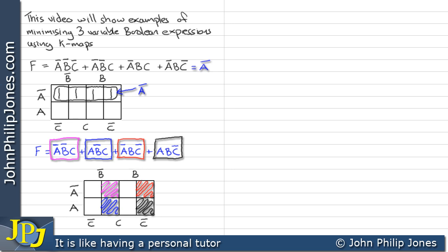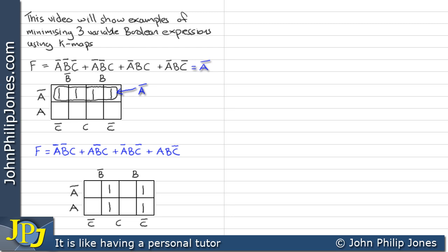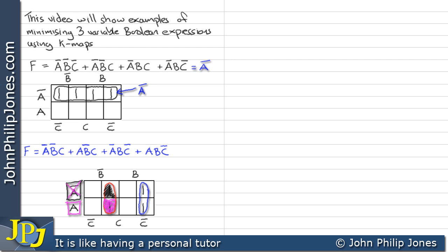We therefore put a 1 in each of those selected areas. On this occasion we have to loop the 2s individually because they're not next to each other. If we have a look at this part of the loop we can see it is in not A, and this part is in A — that's overlapping so we discount those. Shading in the entire loop, it's obviously in not B and it's obviously in C. So the loop is represented by not B and C.